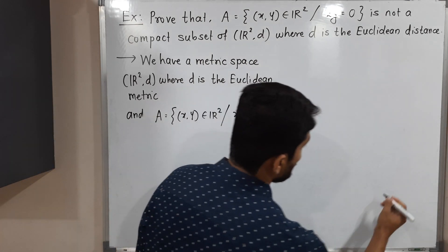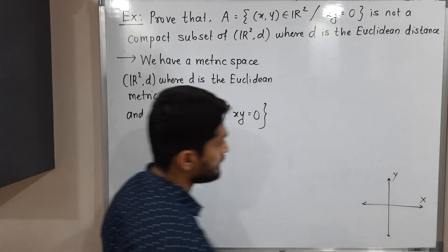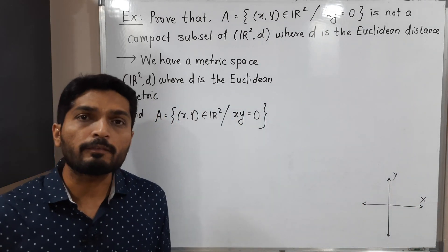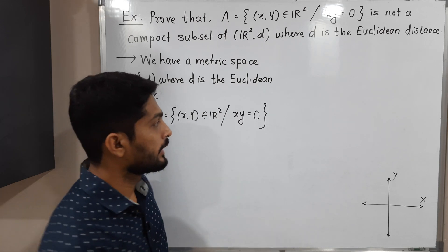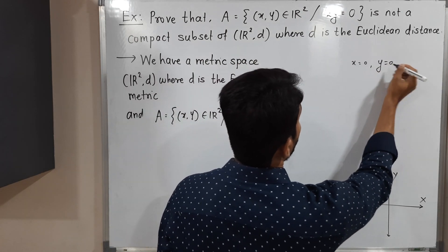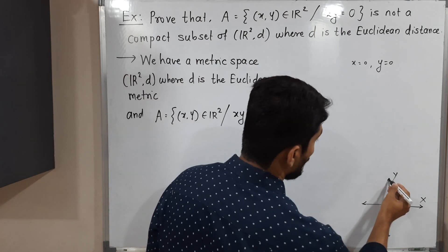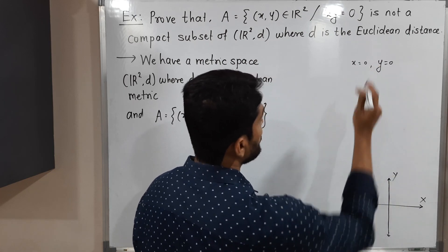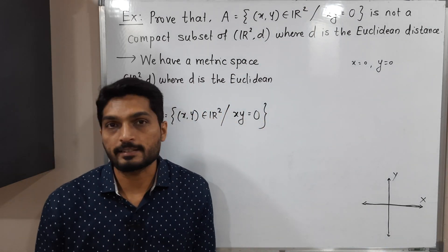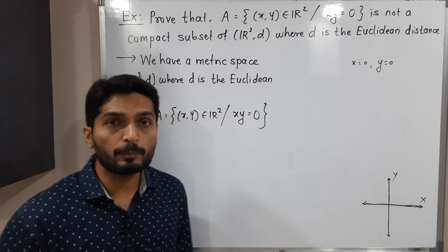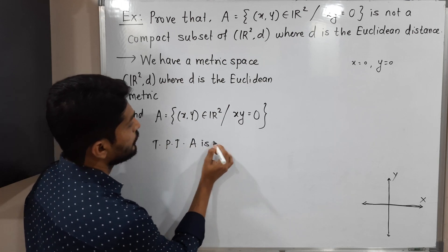Let me draw the diagram. This is our Y axis and this is our X axis. x·y = 0 means either x = 0 or y = 0 or both are zero. x = 0 is the equation of the Y axis, and y = 0 is the equation of the X axis. So the given set is nothing but the union of the X axis and Y axis.